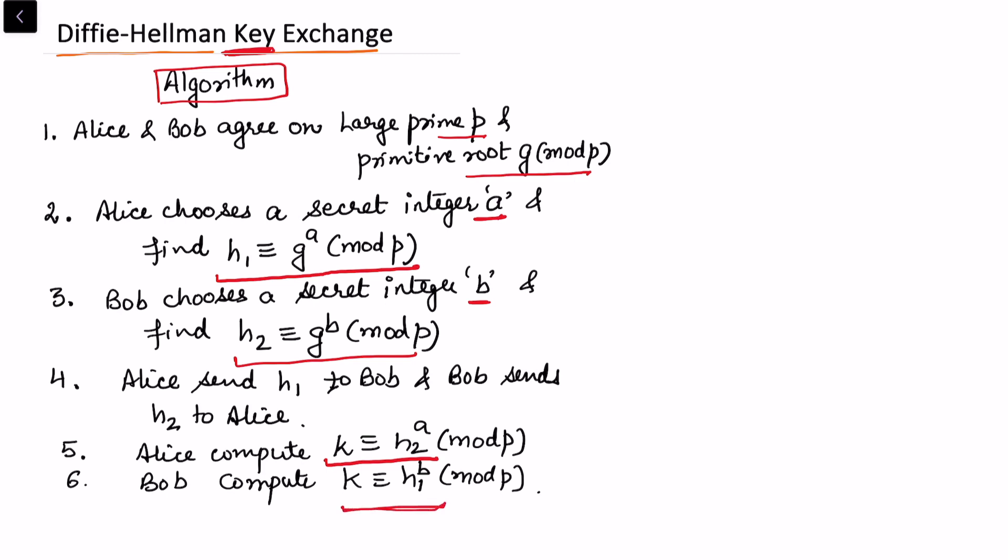The reason they got the same key is that h1 is congruent to g to the power a. This is what Alice had. Raising both sides by b, we have h1 to the power b is congruent to g raised to power ab.